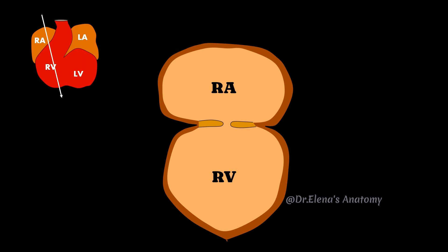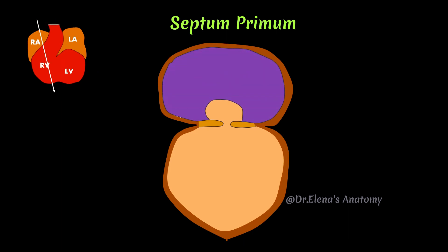Above we have right atrium and below we have the right ventricle and these are the anterior and posterior endocardial cushions. This is a septum primum growing towards septum intermedium and this is foramen primum.